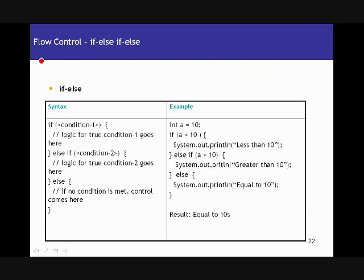In this section, we are going to see what the different flow control statements are in Java and how you use them. There is a table with two columns: the first column is the syntax of the statement, and the second column is an example showing how you actually code that in your programs.